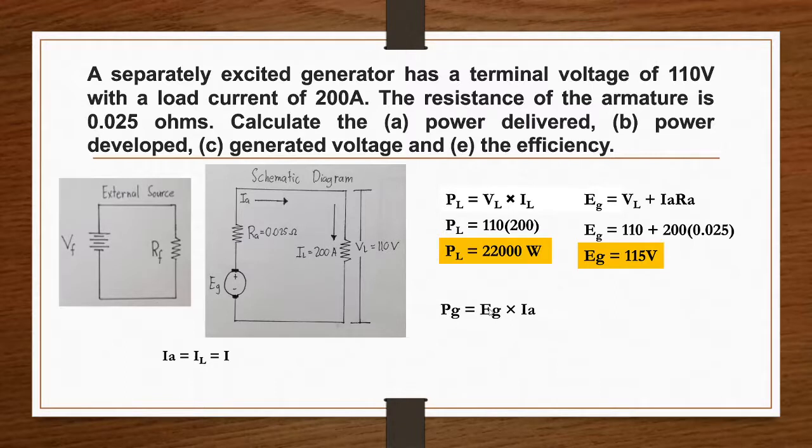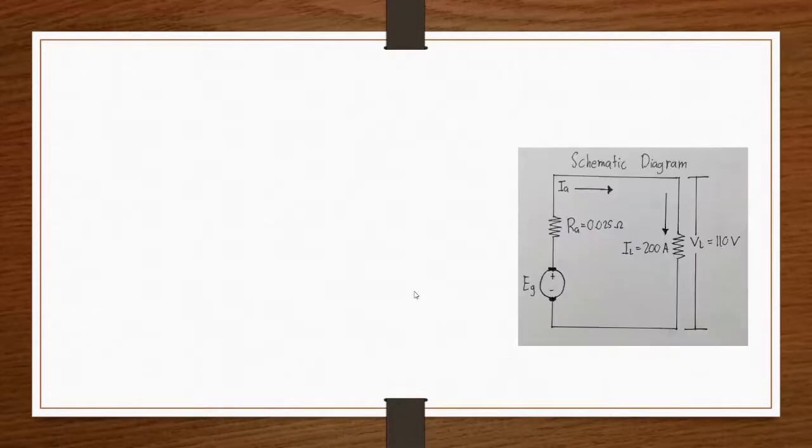Our power developed is generated voltage, 115 volts, times our armature load, which is 200. Our power developed is 23,000 watts.